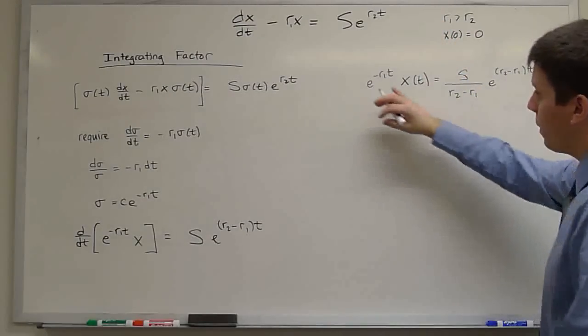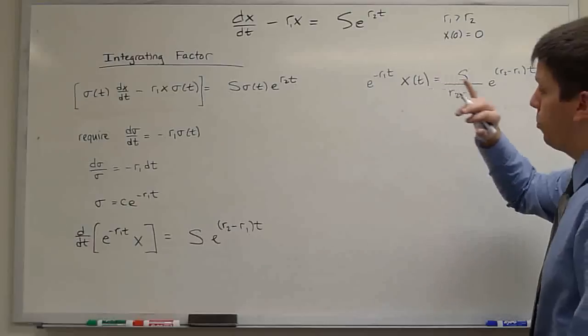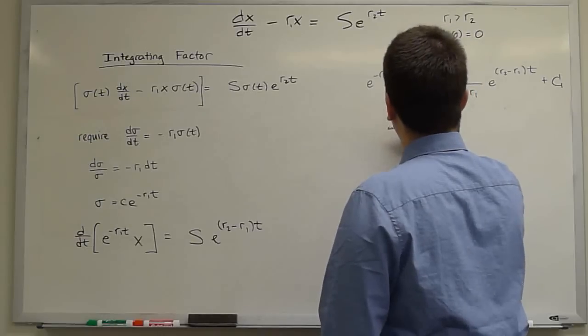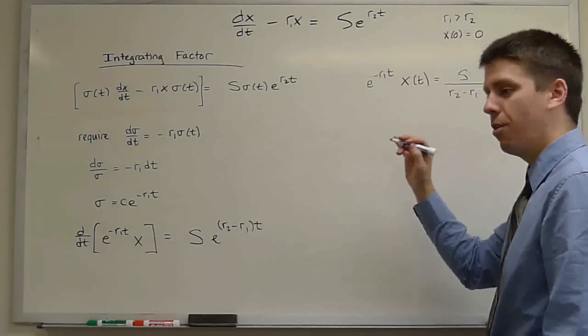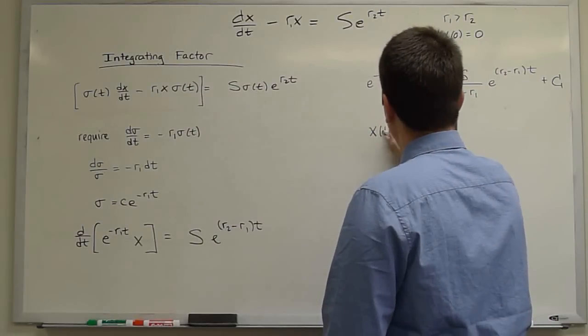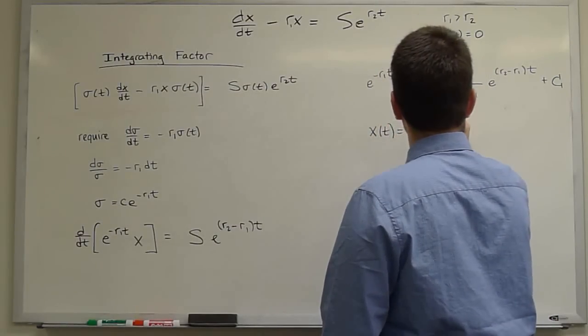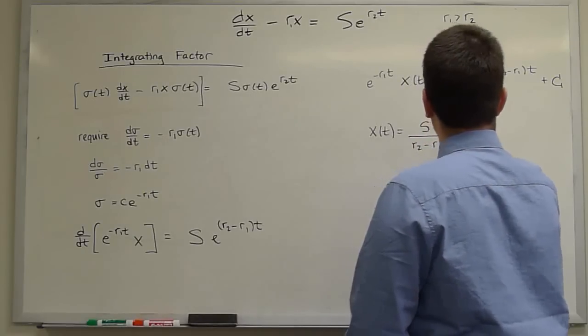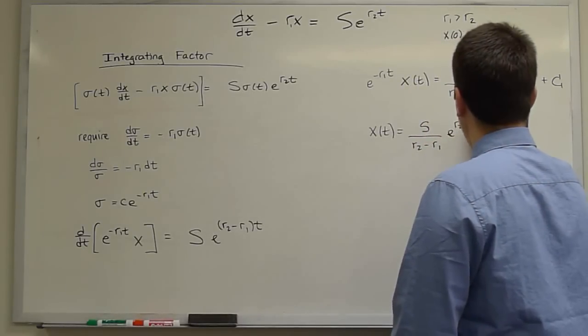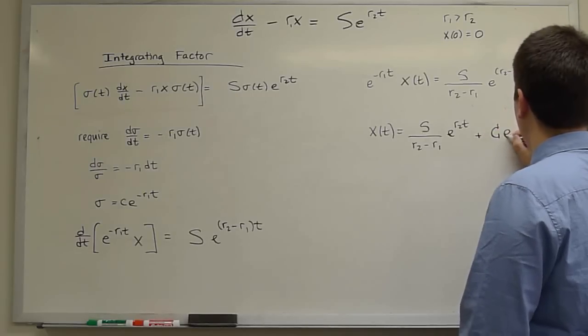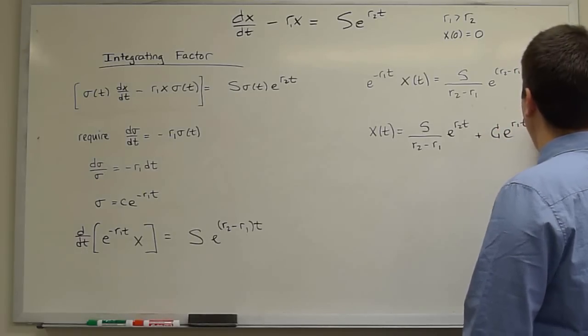And now we divide both sides by e to the minus r1 t, which is the same as multiplying by e to the r1 t. So x of t is s over r2 minus r1 times e to the r2 t plus c e to the r1 t.